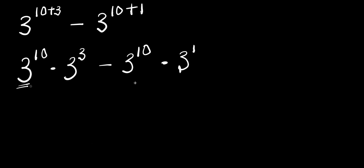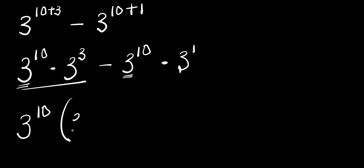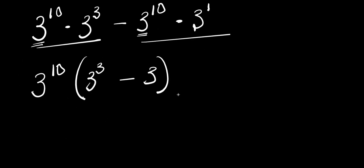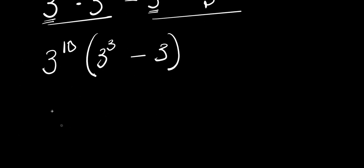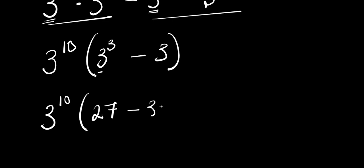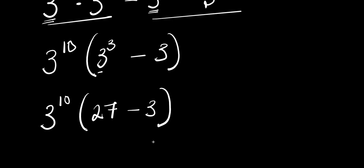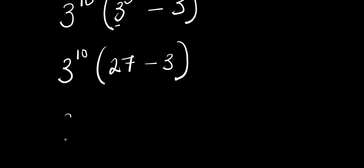What we are going to do is factor out the common term, which is 3^10. So we have 3^10 times (3^3 minus 3). That gives us 3^10 times (27 minus 3), so from here we have 3^10 times 24.